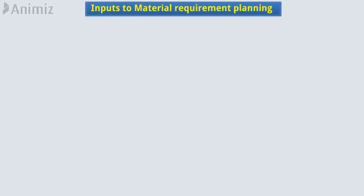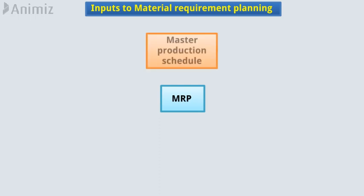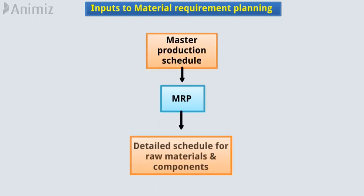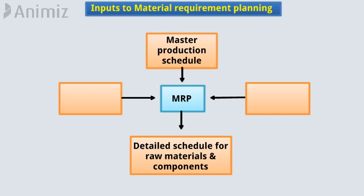Now, inputs to material requirement planning. MRP converts the master production schedule into a detailed schedule for raw materials and components. The master production schedule is one of the three sources of input data on which MRP relies. The other two inputs are the bill of material file and the inventory record file.